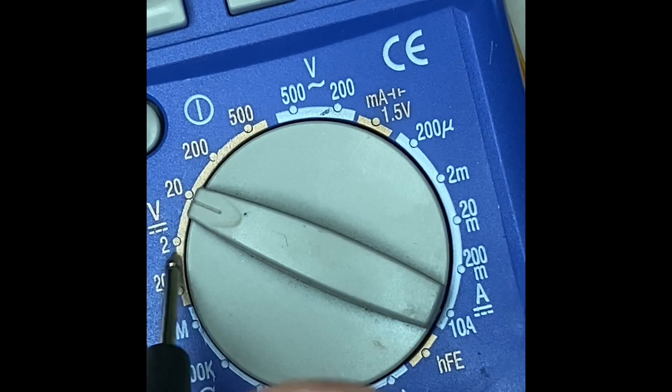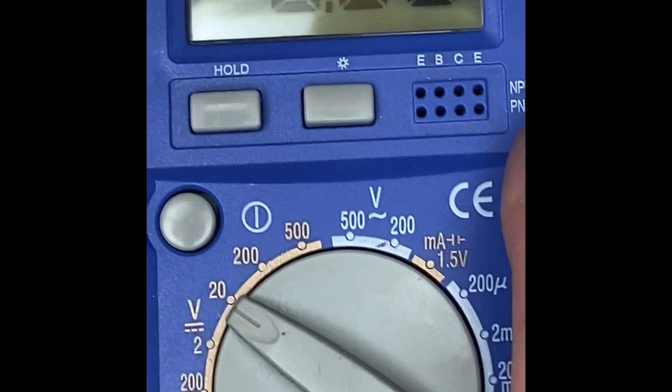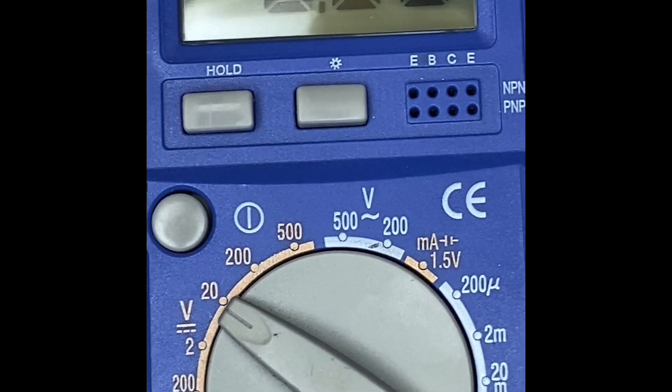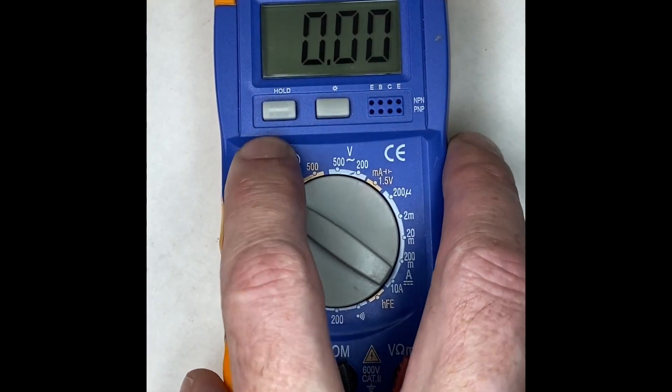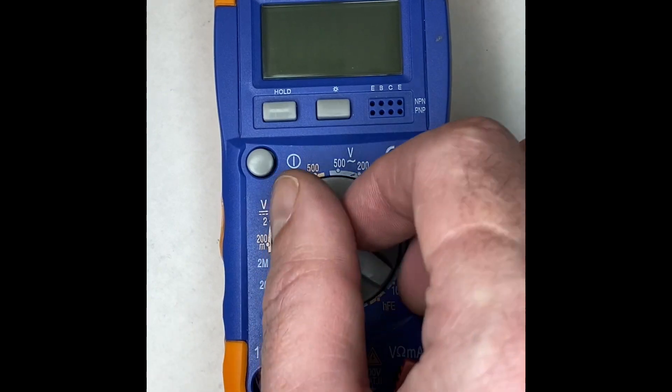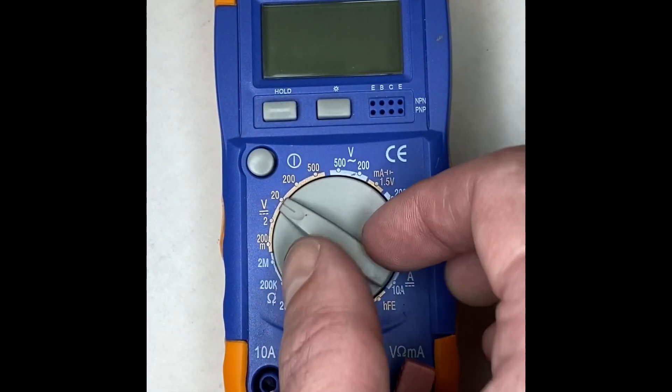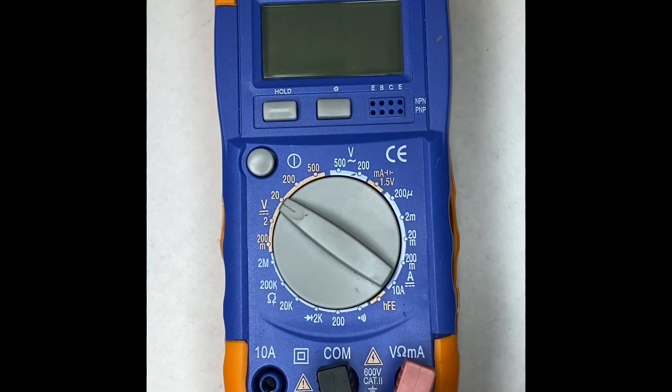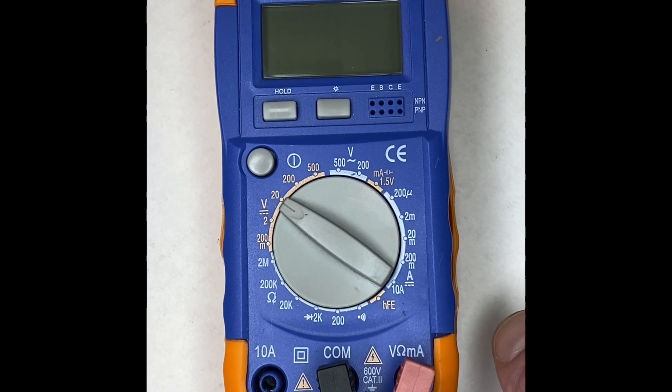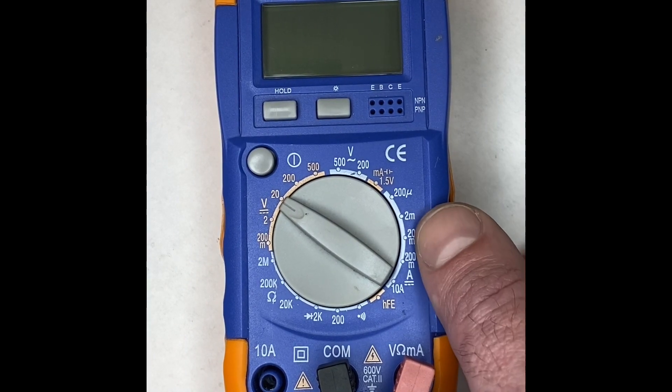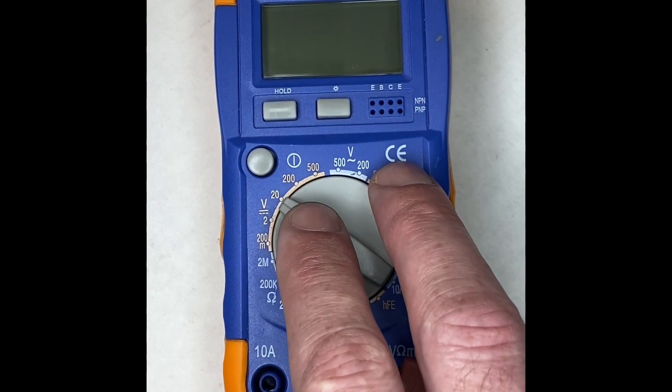Okay, so this particular model—this is the one that we sell at Build Your Own Clone—this particular model has an on-off button. A lot of them will just auto turn off after they've been sitting around for a while and turn on when you turn the dial. They're all a little different, but for the most part they're all the same, and this is pretty typical.